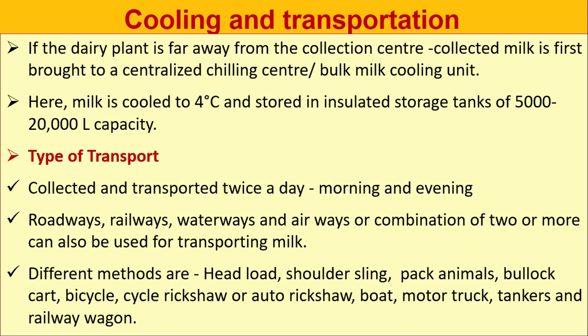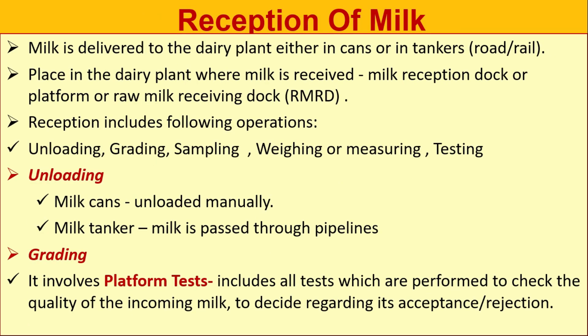Roadways, railways, waterways, and airways, or a combination of two or more, can be used for transporting milk. Different methods include headlot, shoulder sling, pack animals, bullock cart, bicycle, cycle rickshaw or auto rickshaw, boat, motor truck, tankers, and railway wagons.